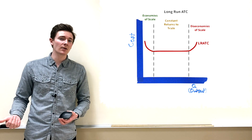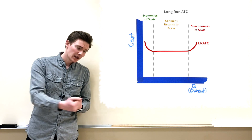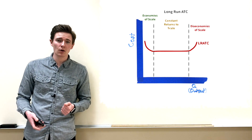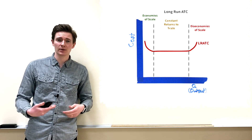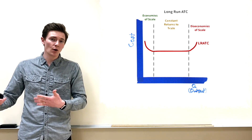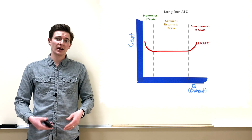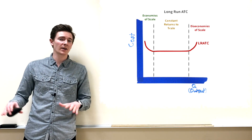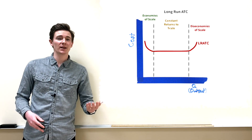Constant returns to scale means adjusting factory size still keeps you at that lowest possible cost — whether you increase or decrease size, average cost stays flat. Diseconomies of scale happen when companies grow so large they mismanage resources and become inefficient, increasing the average cost per unit — which is why some very large long-established companies eventually declare bankruptcy. And that covers everything from chapter 13.